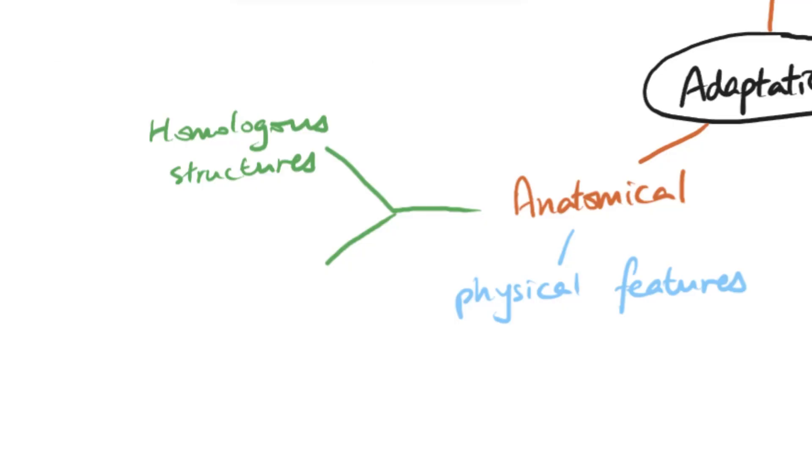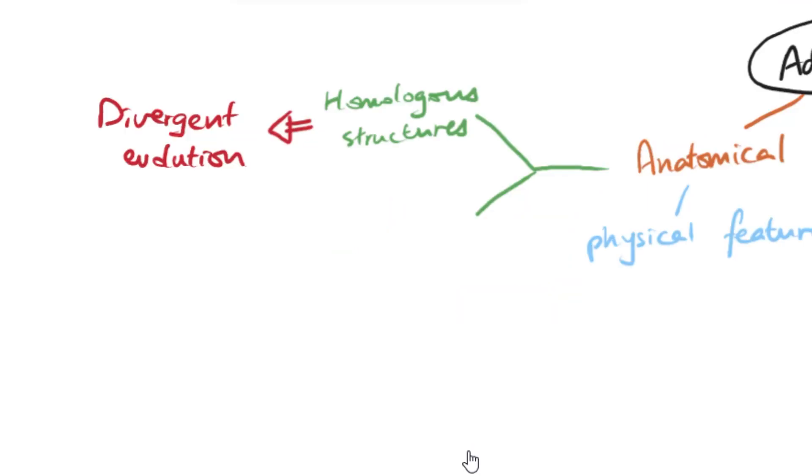They look very different but they all are made up of the same bone arrangement, especially with the five digits. We have five fingers, but if you look at the wings and the flippers they also have five digits that form the whole structure. That is evidence for what we call divergent evolution. Divergent evolution refers to when different organisms evolve from the same common ancestor, so they have the same genetic origin.